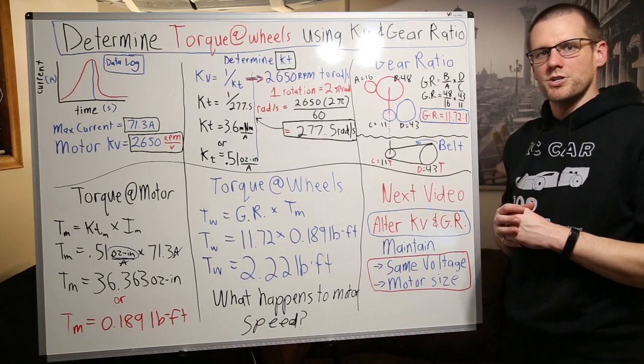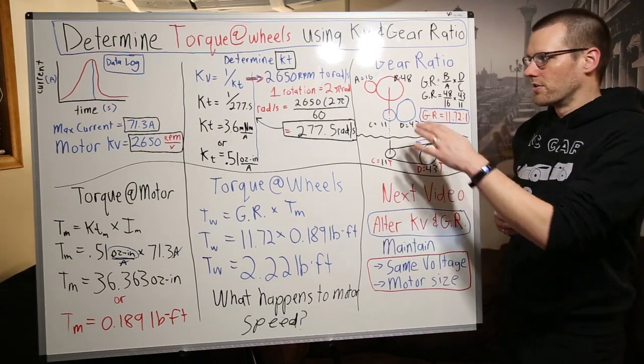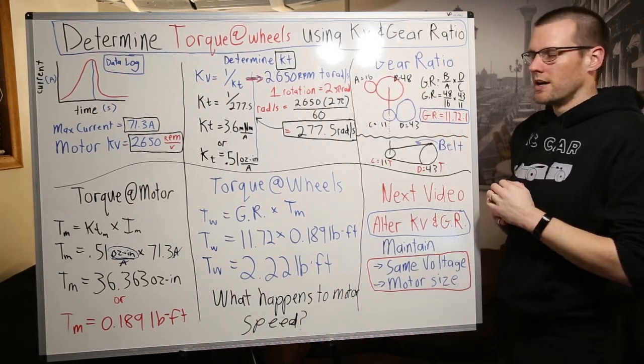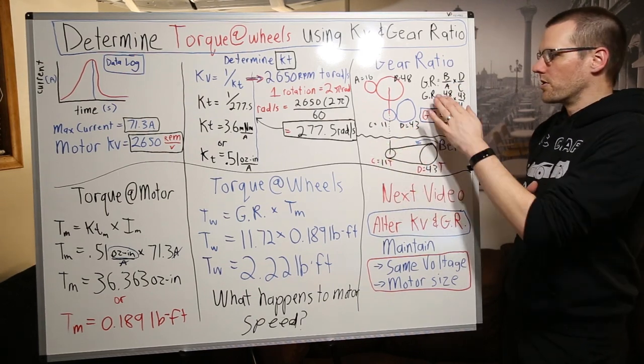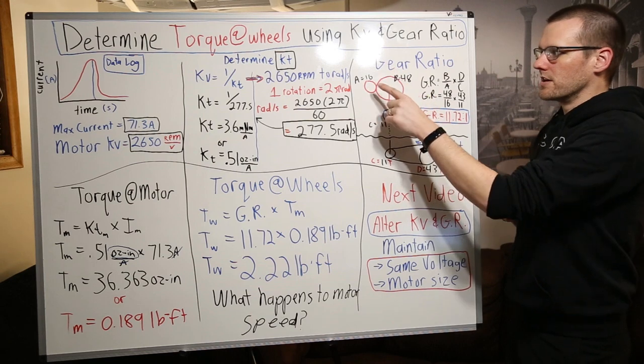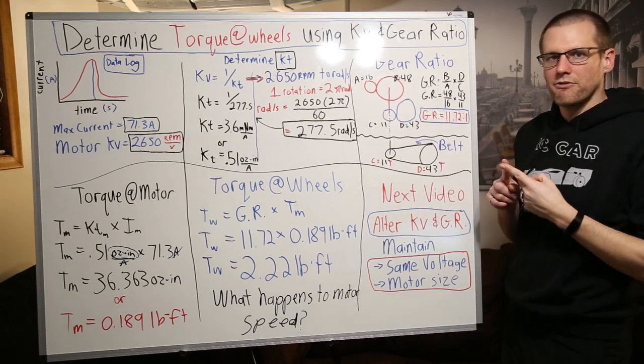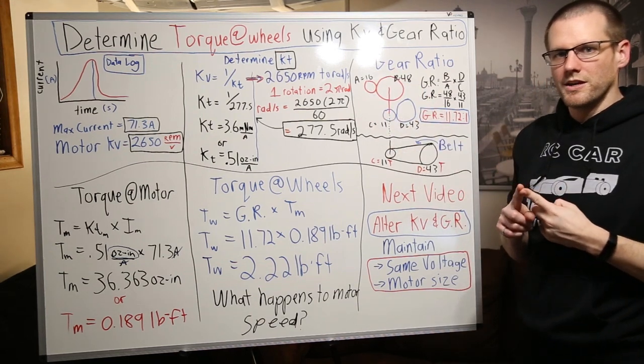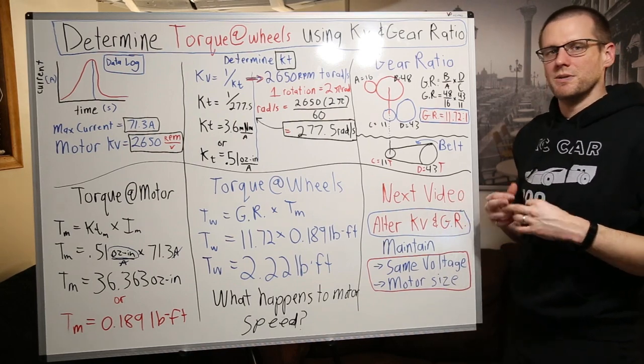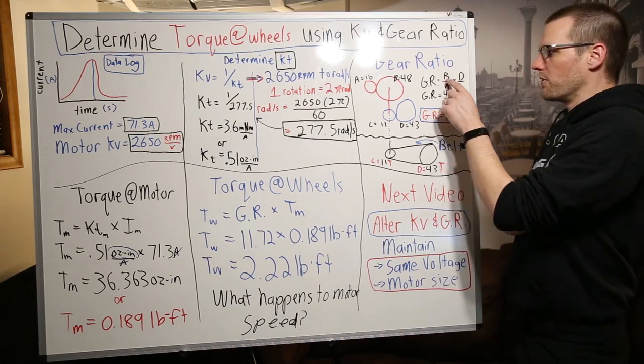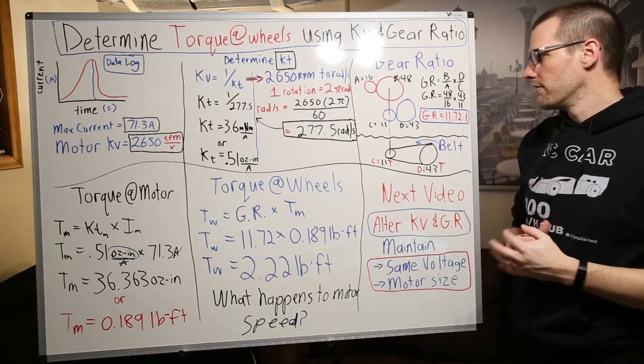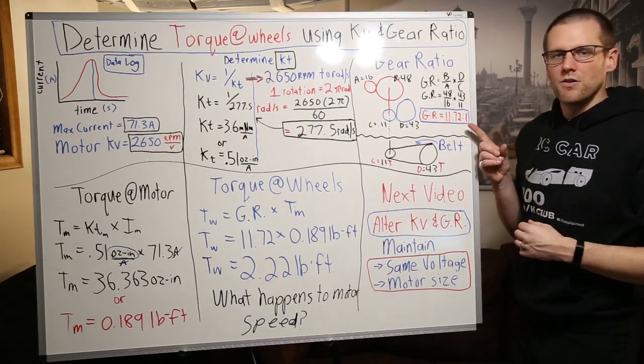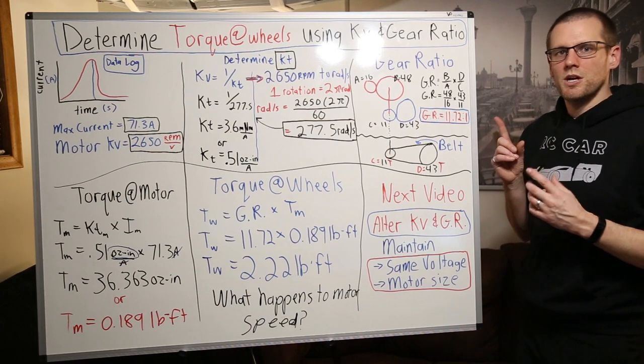From there, we can use the equation big gear over small gear, or in this case B over A, and that's going to be multiplied by our D over C. When we go ahead, throw all these numbers in, all these numbers are based off of the number of teeth on the gear. We use that because that is the best practice. I find it to be the easiest as well. We plug it in, 48 over 16 multiplied by our 43 over 11. This gives us a gear ratio of 11.72 to 1.